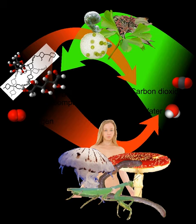Heterotrophs obtain energy by breaking down organic molecules obtained in food. Carnivorous organisms rely on autotrophs indirectly, as the nutrients obtained from their heterotroph prey come from autotrophs they have consumed. Most ecosystems are supported by the autotrophic primary production of plants that capture photons initially released by the sun. Plants can only use a fraction of this energy for photosynthesis — approximately 1% is used by autotrophs. The process of photosynthesis splits a water molecule, releasing oxygen into the atmosphere and reducing carbon dioxide to release the hydrogen atoms that fuel the metabolic process of primary production. Plants convert and store the energy of the photon into the chemical bonds of simple sugars during photosynthesis. These plant sugars are polymerized for storage as long-chain carbohydrates, including other sugars, starch, and cellulose. Glucose is also used to make fats and proteins.